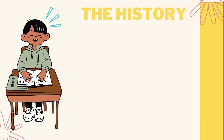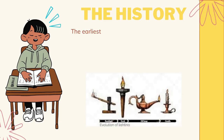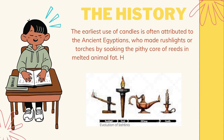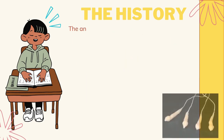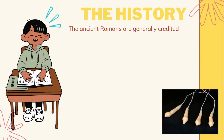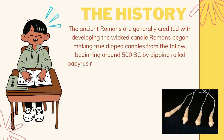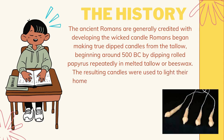The history of candle: The earliest use of candles is often attributed to the ancient Egyptians, who made rush lights or torches as a source of light in their daily life by soaking the pithy core of reeds in melted animal fat. However, the rush lights had no wick like a true candle. The ancient Romans are generally credited with developing the wicked candle. Romans began making true dipped candles from tallow beginning around 500 BC by dipping rolled papyrus repeatedly in melted tallow or beeswax. The resulting candles were used to light their homes, aid travelers at night, and in religious ceremonies.